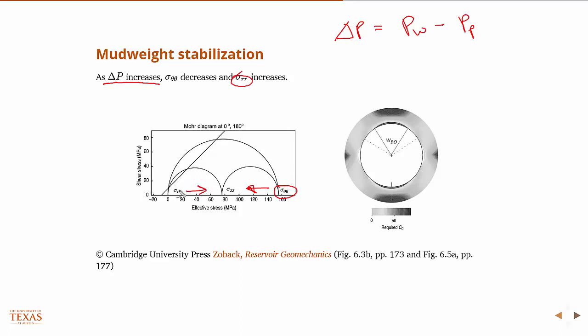And so if I'm moving those together, I'm shrinking these Mohr circles, getting them away from that failure line, therefore providing some stabilization from breakouts.